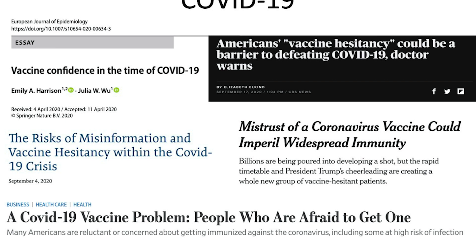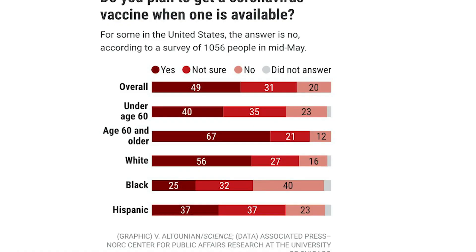Despite the world waiting patiently for the coronavirus vaccine, the University of Chicago released data in May of 2020 showing that not everyone — at least in the United States, among around 1,000 people surveyed — was completely sure they were planning on getting vaccinated against COVID-19. Overall, less than half were certain, and this has major implications for the control of the pandemic and for vaccine hesitancy as well.